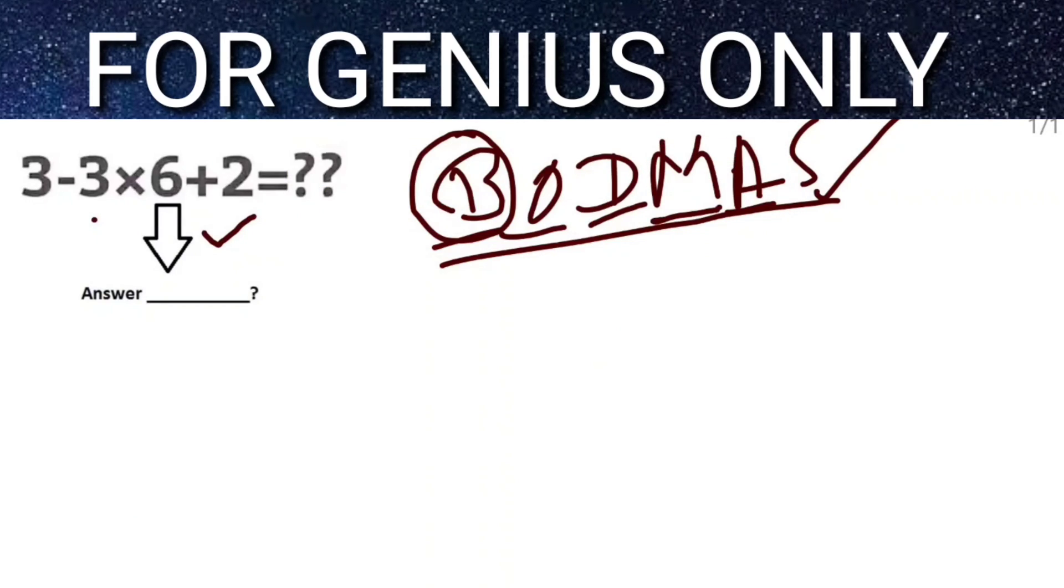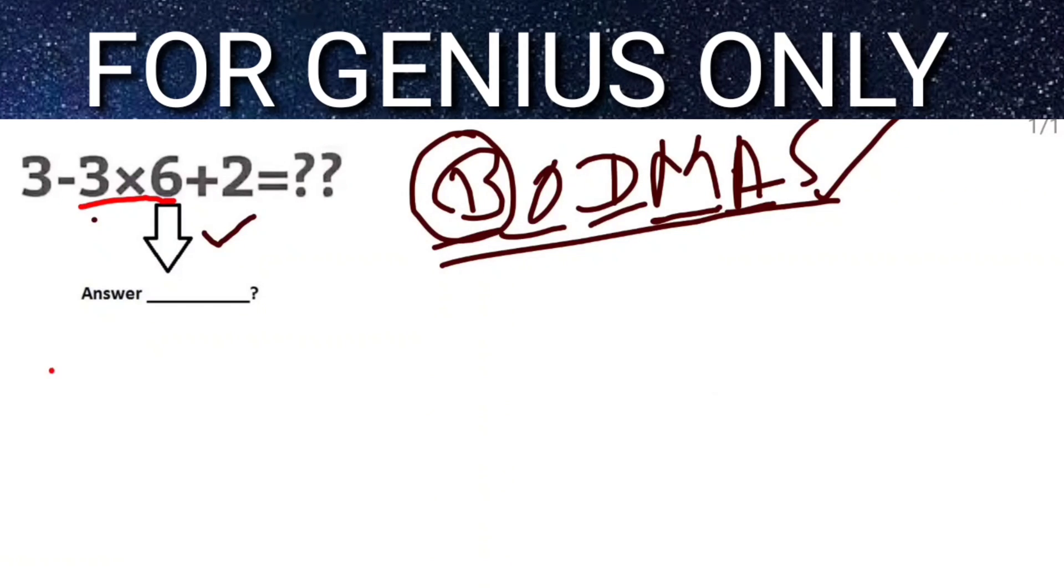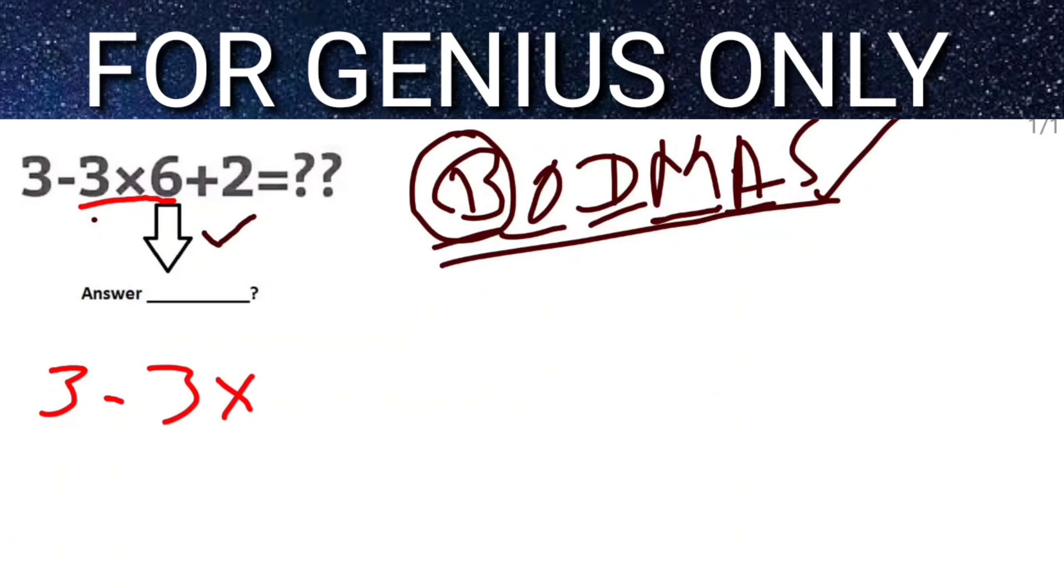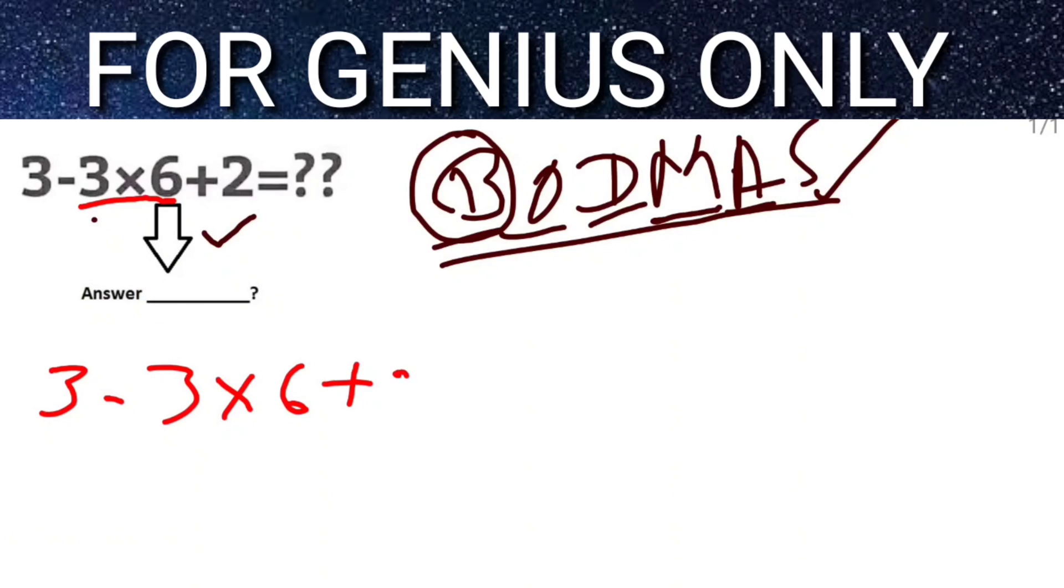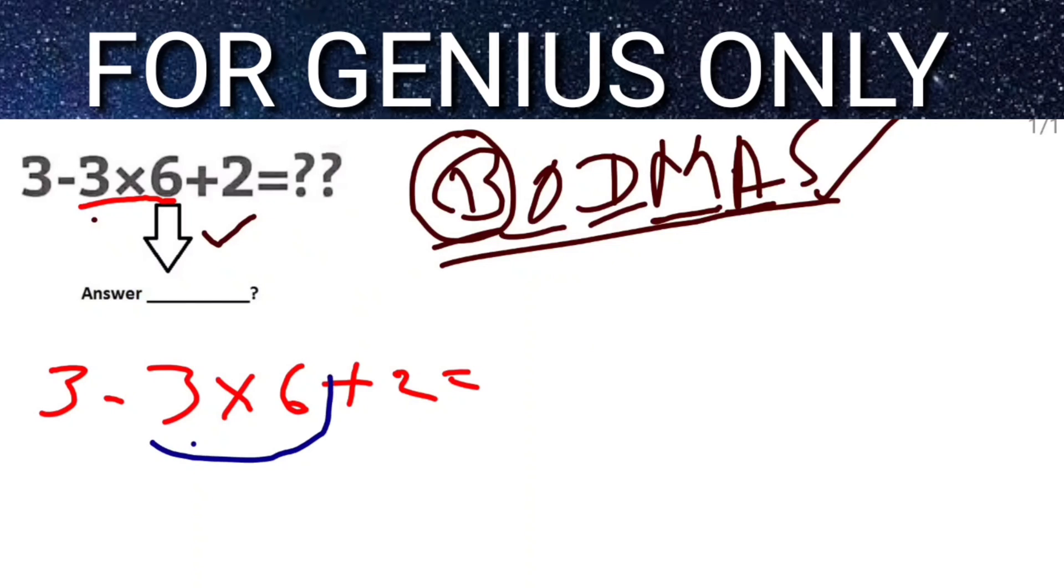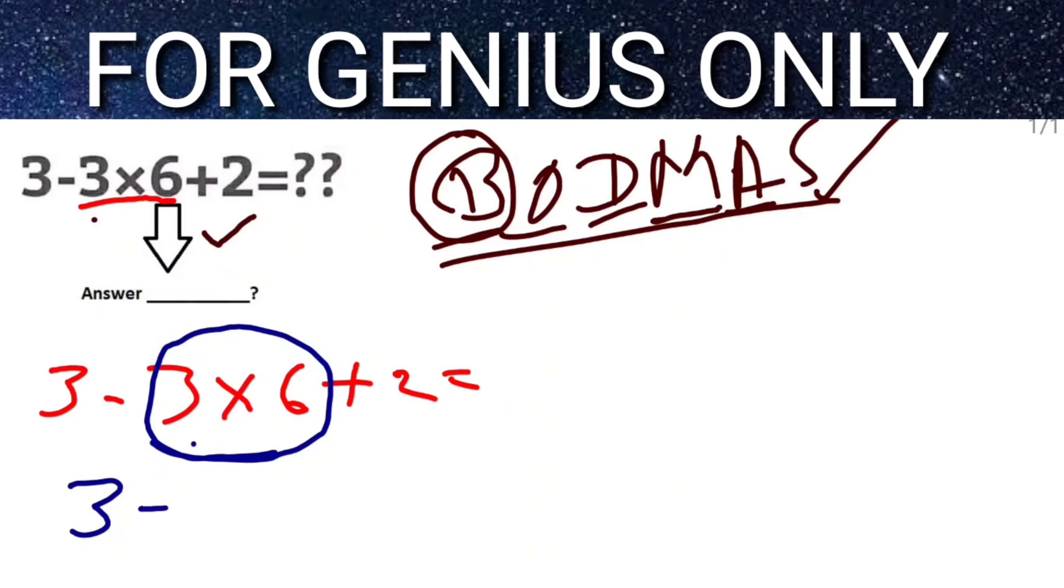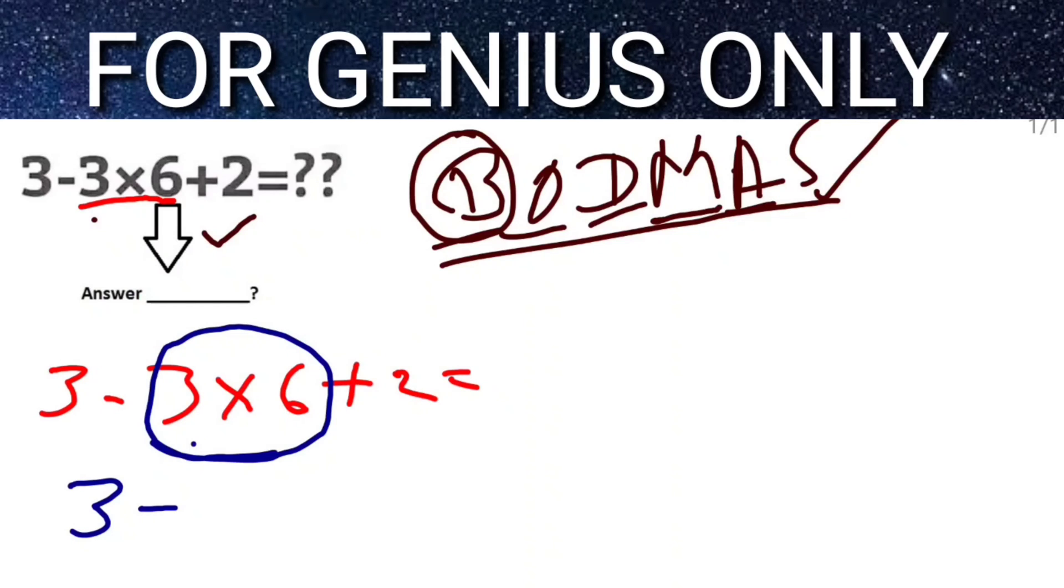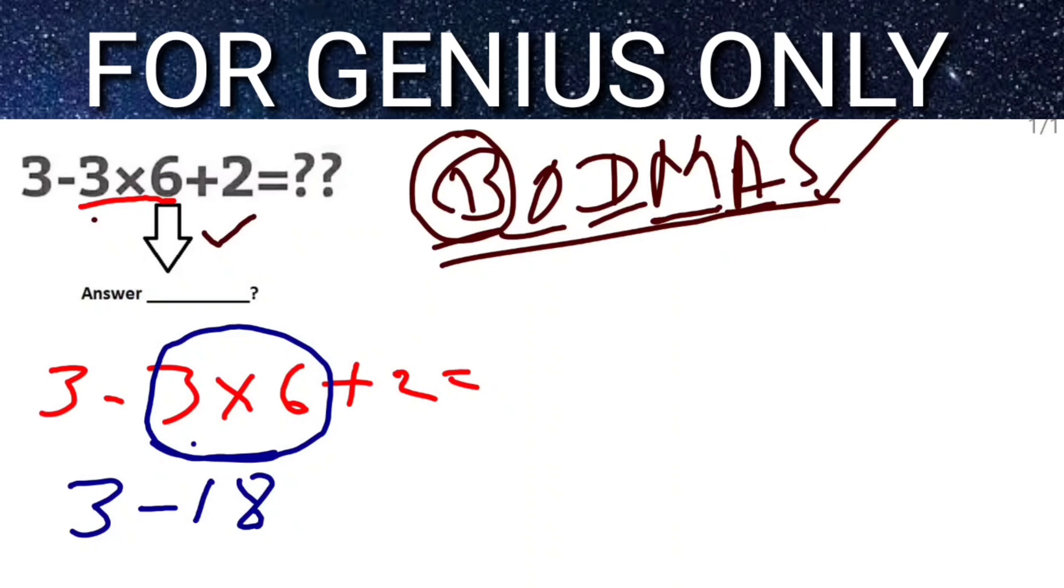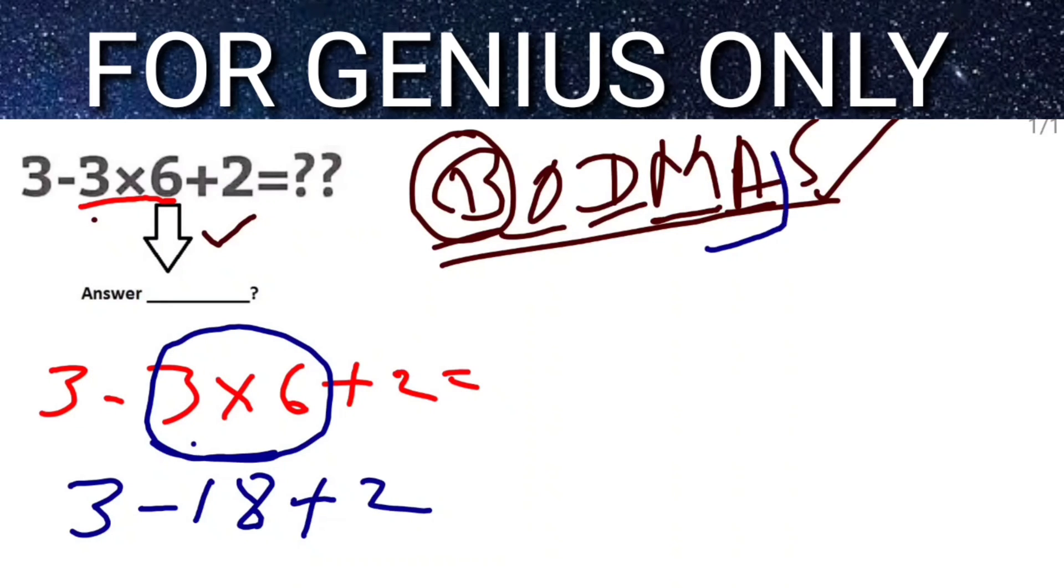So what do we have to do first in this equation? First, we have to multiply these two. 3 - 3 × 6 + 2. We have to do first the multiplication: 3 times 6 is 18. So it becomes 3 - 18 + 2.